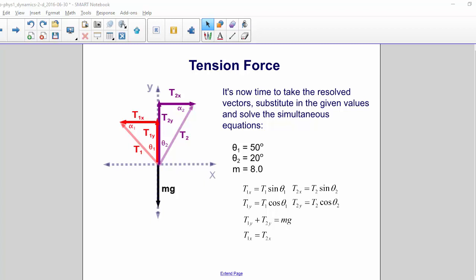So we have theta1 equals 50 degrees, theta2 equals 20 degrees, and the mass equals 8 kilograms.